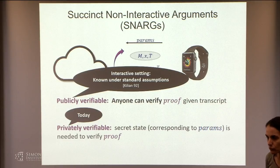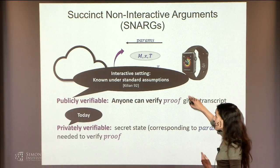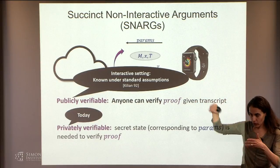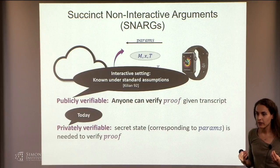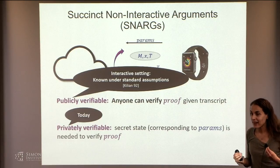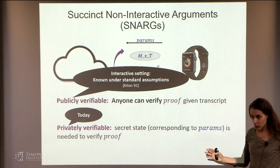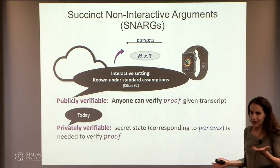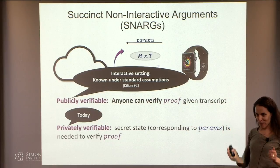What's the difference if you allow interactions — what's the difference from the Muggles paper? The Muggles paper is in the interactive setting, and there we can do it with information-theoretic security — sound against any cheating prover. But it's not all of P, exactly because you can't get all of P without restrictions; it's restricted only to bounded depth.